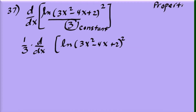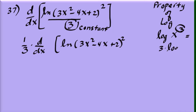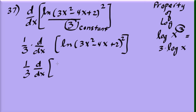Using the property of logarithm: the logarithm of x to the third power equals 3 times the logarithm of x. We can rewrite natural log of (3x squared minus 4x plus 2) squared as 2 times the natural log of (3x squared minus 4x plus 2).